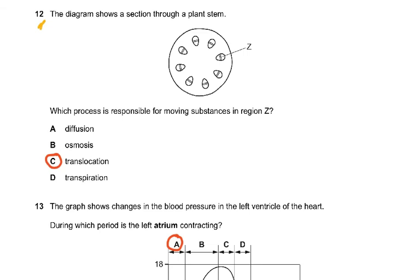Question 12: the diagram shows a section through a plant stem with vascular bundles. The inside is the xylem and the outside is the phloem. In the phloem, there is translocation. In the xylem, it's the suction force that makes water flow by mass flow up the stem. Transpiration cannot take place in the xylem.